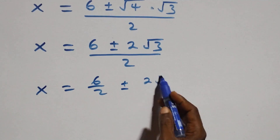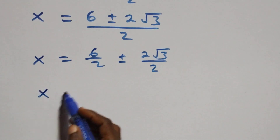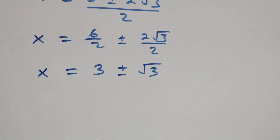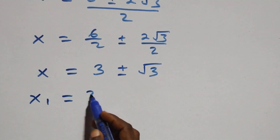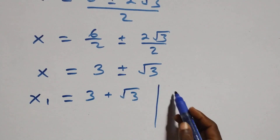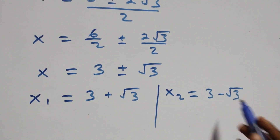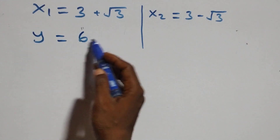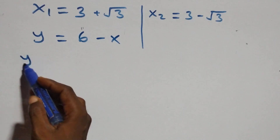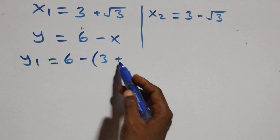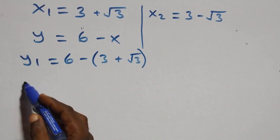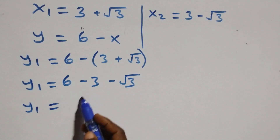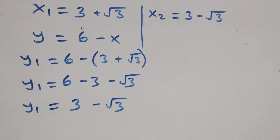This simplifies to three plus or minus root three. So we have two possible values: x₁ equals three plus root three, and x₂ equals three minus root three. Finding the corresponding y values using y equals six minus x, we get y₁ equals six minus (three plus root three), which gives y₁ equals three minus root three.